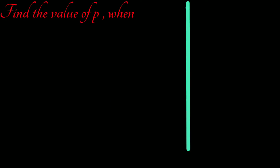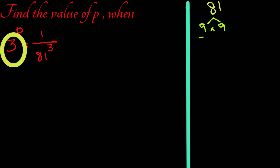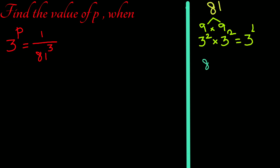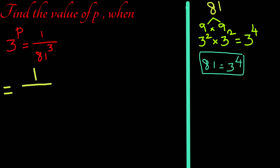Find the value of p when 3 to the power p equals 1 over 81 to the power 3. To find the value of p, let us write the common base as 3. 81 as 3 to the power 4, so this equals 1 over 3 to the power 4, the whole power 3.